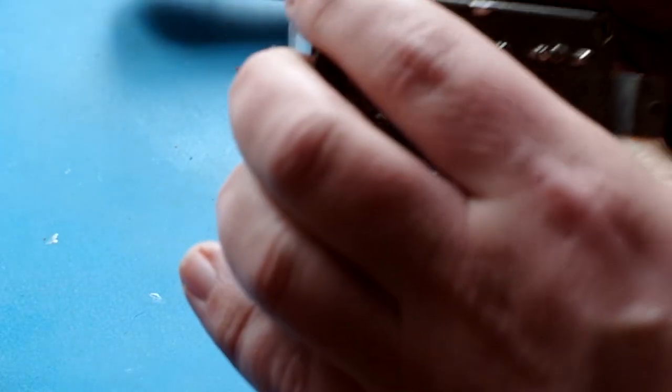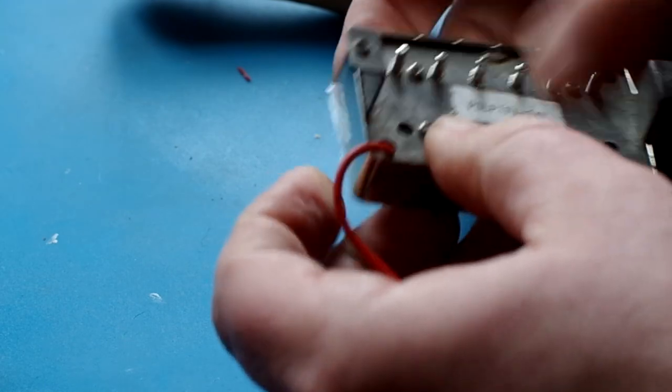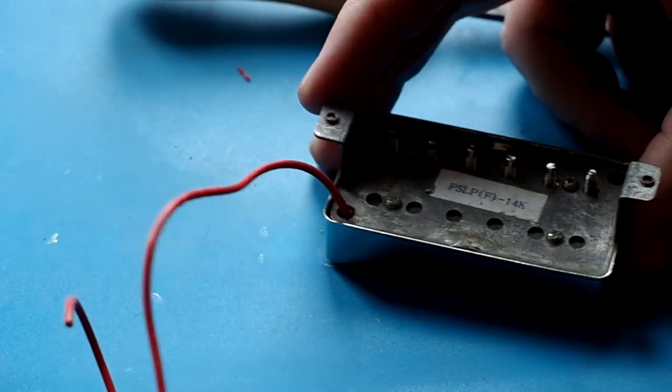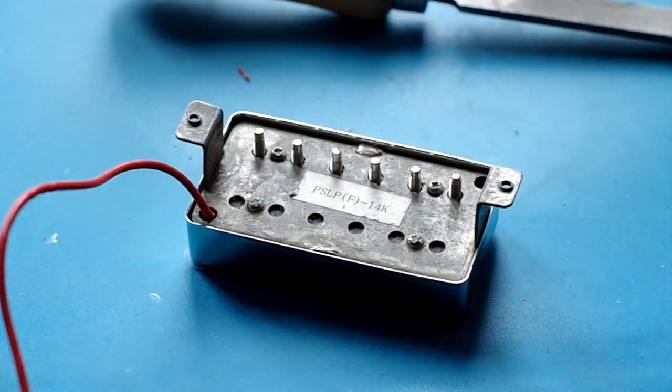Once we've done that, let's dry fit everything up and make sure that everything corresponds, where you've filed away will correspond now with that solder joint.